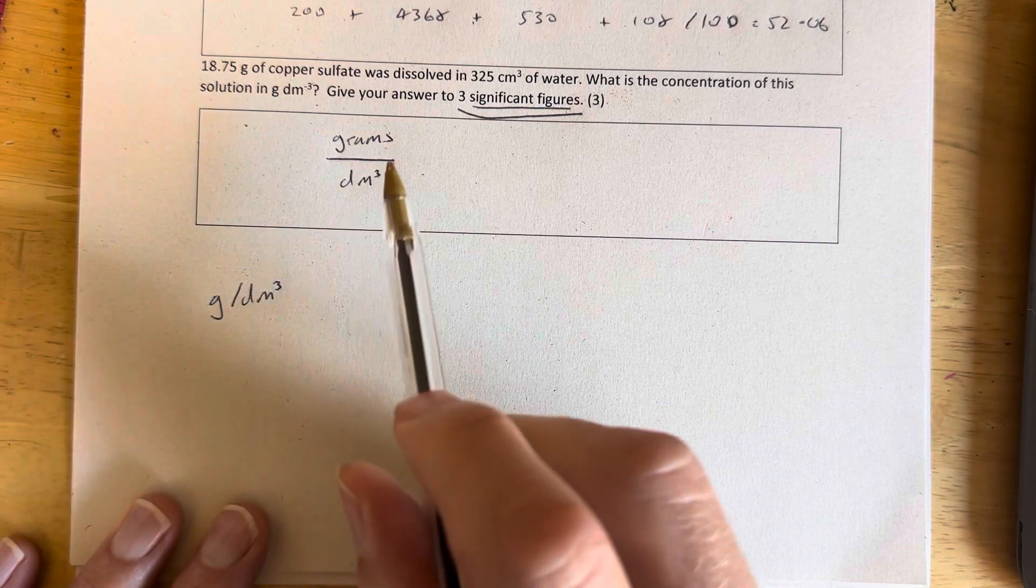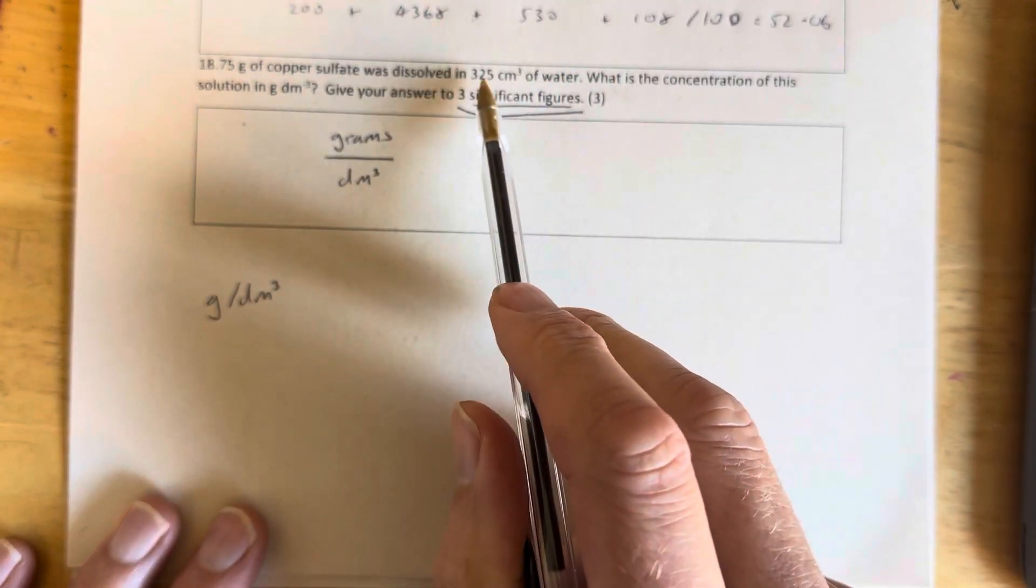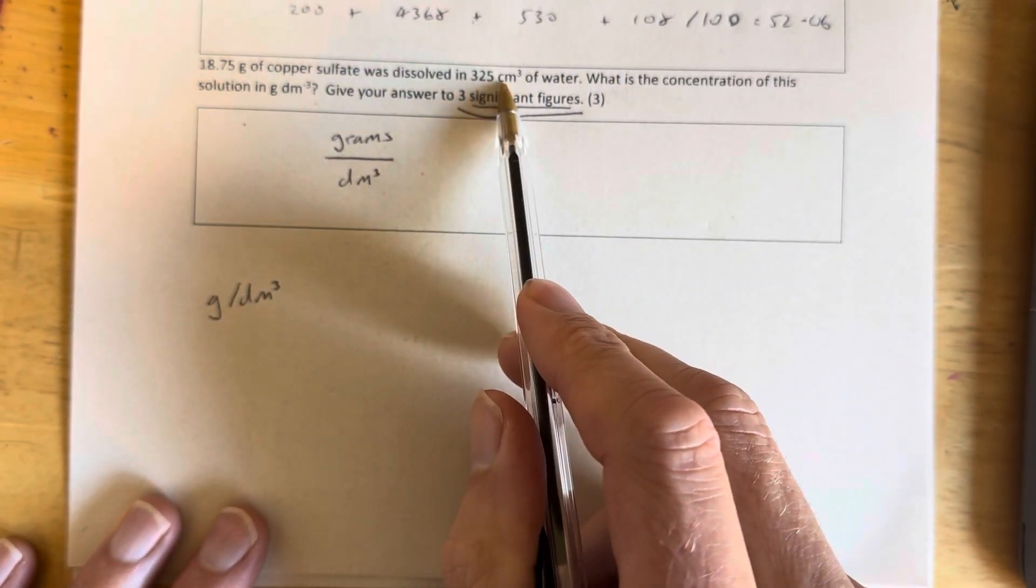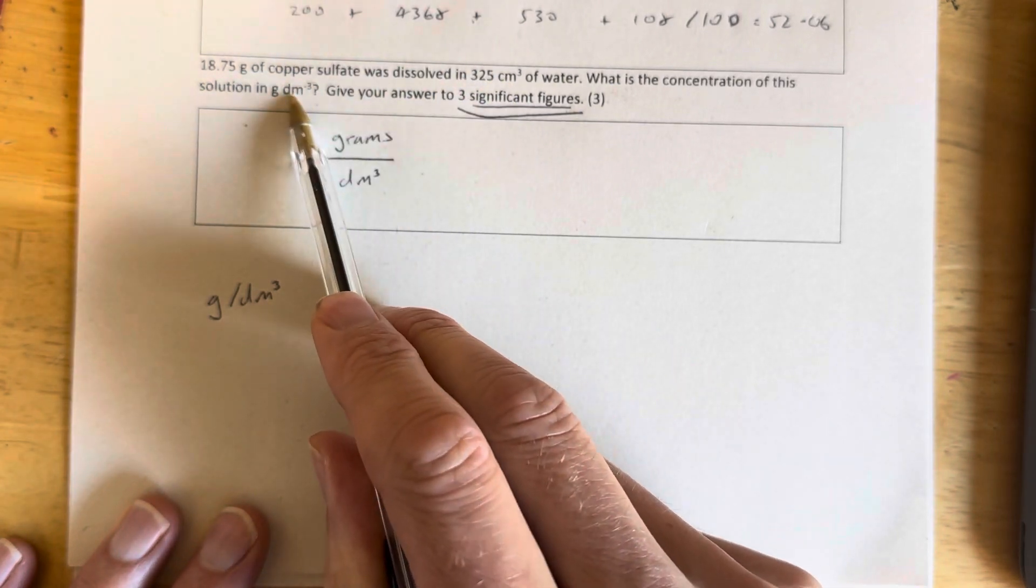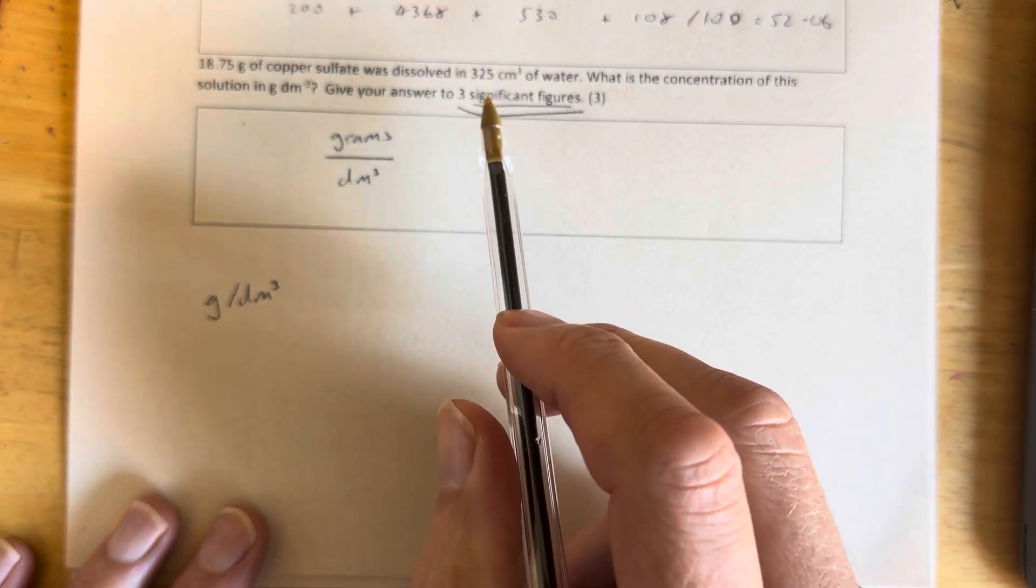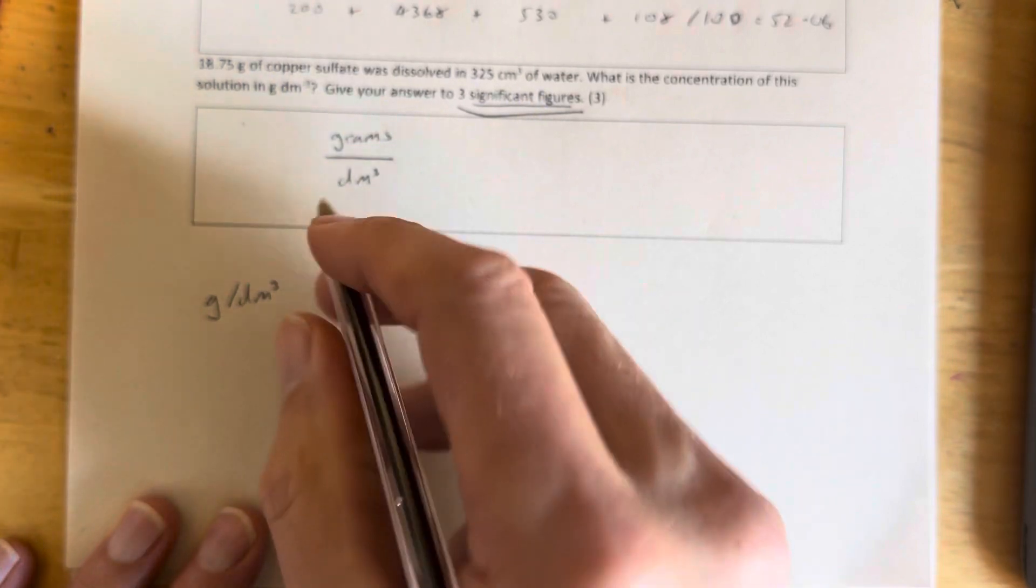Now the next fly in the ointment here is generally in the chemical labs we measure volume in centimetre cubed, but the unit for concentration is always in decimetre cubed. So you need to have learnt there is a thousand centimetre cubed in a decimetre cubed.